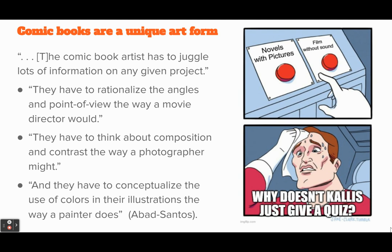Comic books are a unique art form. They have angles and points of view the way a movie director shoots a scene. The artist uses color palettes and different ways of composing and contrasting colors on the page, and characters in relationship to background colors — the way a painter does it. There are two ways to view comics: many people talk about it being a novel with pictures, which is entirely possible, but it could also be that it is film without sound.